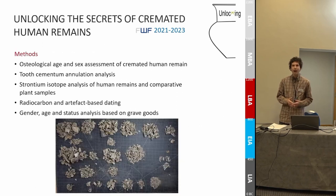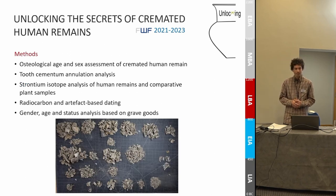We are applying a number of scientific methods to get the maximum amount of information from cremated human remains. We combine a state-of-the-art osteological analysis with tooth cementum annulation. Strontium isotope analysis of 500 samples from human remains and comparative plant samples give us insights into mobility. We performed a large amount of radiocarbon dates directly from cremated remains, and we analyzed gender, age, and status based on grave goods.